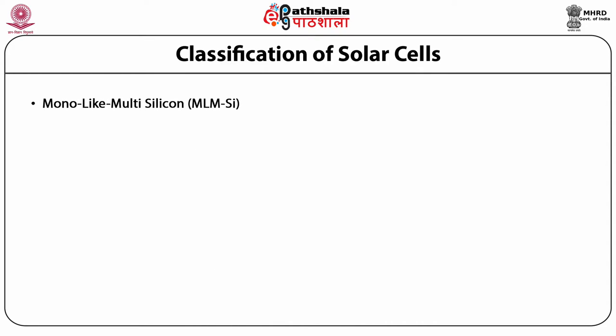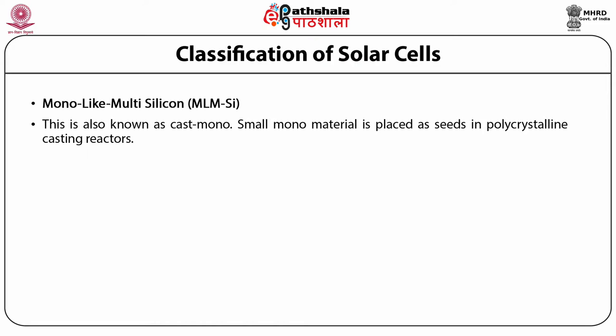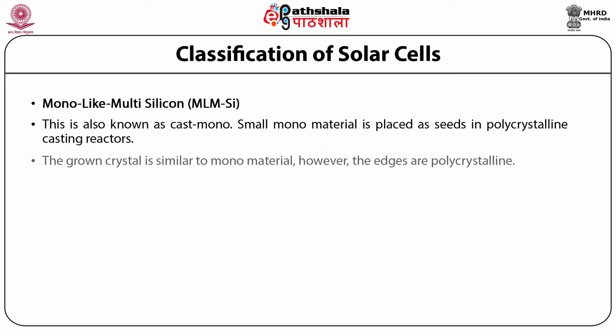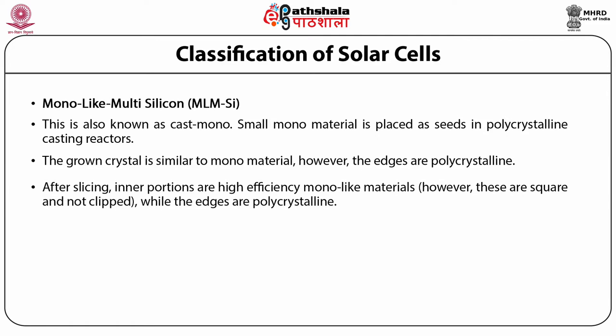Now, mono-like or multi-silicon, that is MLM silicon, also known as cast mono. Small mono material is placed as seeds in polycrystalline casting reactors. The grown crystal is similar to mono material; however, the edges are polycrystalline. After slicing, inner portions are high efficiency mono-like materials, which are square and not clipped, while the edges are polycrystalline. This processing produces mono-like cells at the cost of poly.